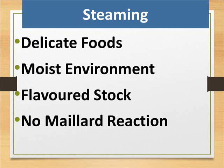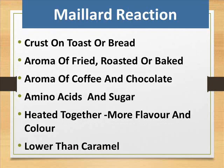Steaming is used for delicate foods in a moist environment using flavored stock, and produces no Maillard reaction. The Maillard reaction refers to the crust on toast or bread, the aroma of fried, roasted, or baked foods, and the aroma of coffee and chocolate — it occurs when amino acids and sugars are heated together to produce more flavor and color, at a temperature lower than caramelization.